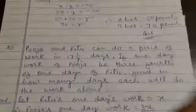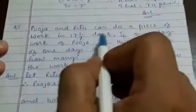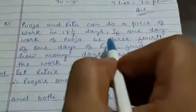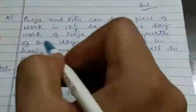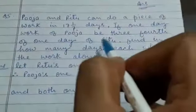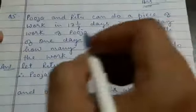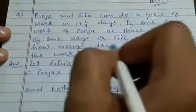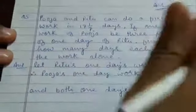The next question is question number 5. Puja and Ritu can do a piece of work in 17 and 1/7 days. If one day's work of Puja is 3/4th of one day's work of Ritu, find in how many days each will do the work alone.